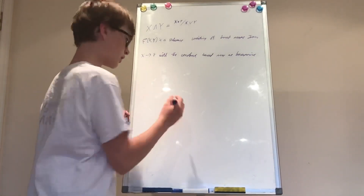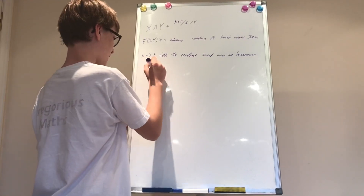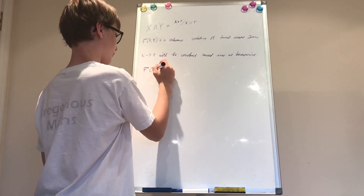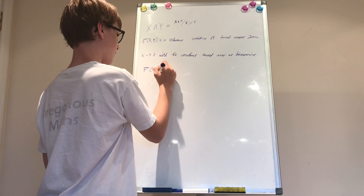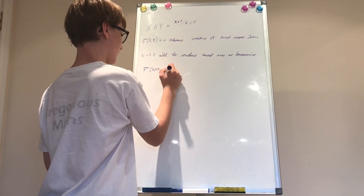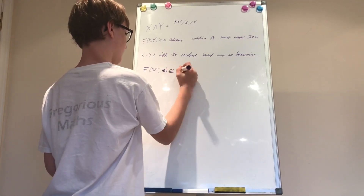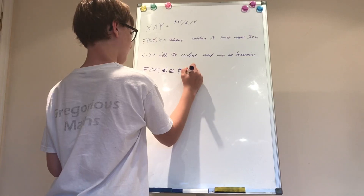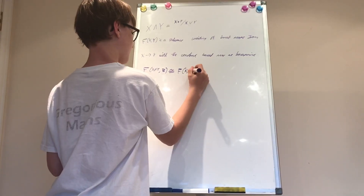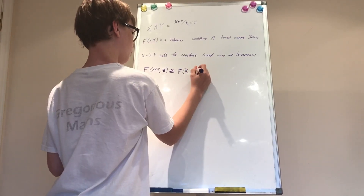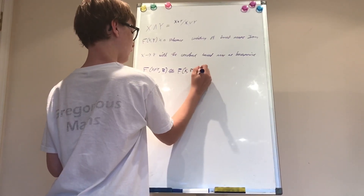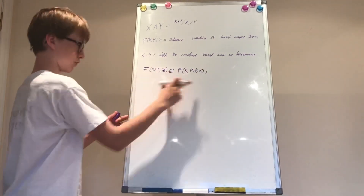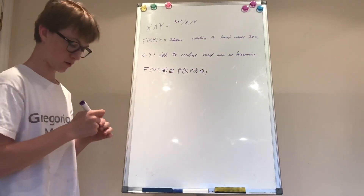We have a natural homeomorphism between F of (X smash product Y, Z) and F of (X, F(Y, Z)). This is a natural homeomorphism between the two.